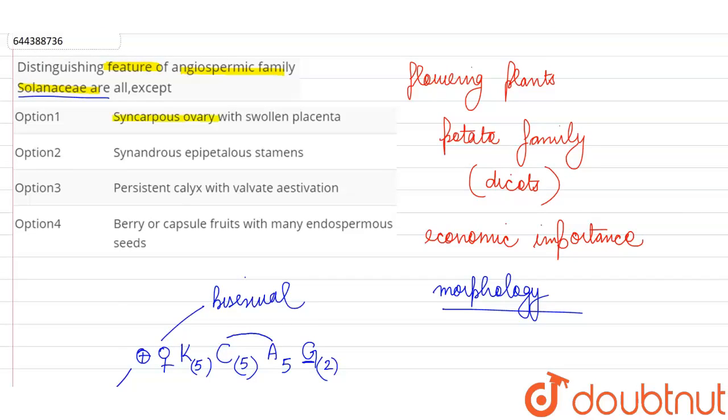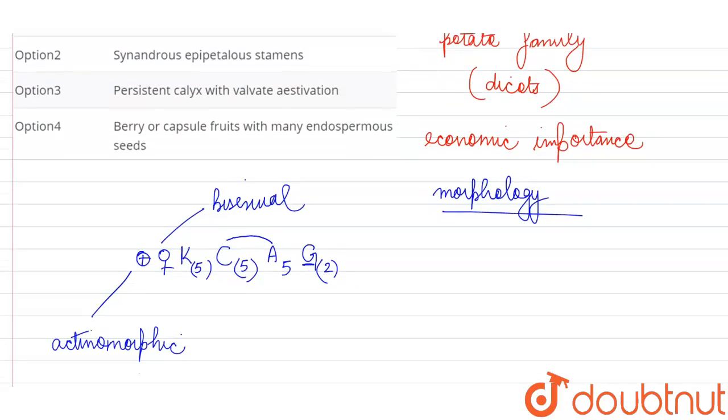First of all they are saying syncarpous ovary with swollen placenta. So both of these things are correct regarding the gynoecium of a Solanaceae flower. We have superior bicarpellary ovary.